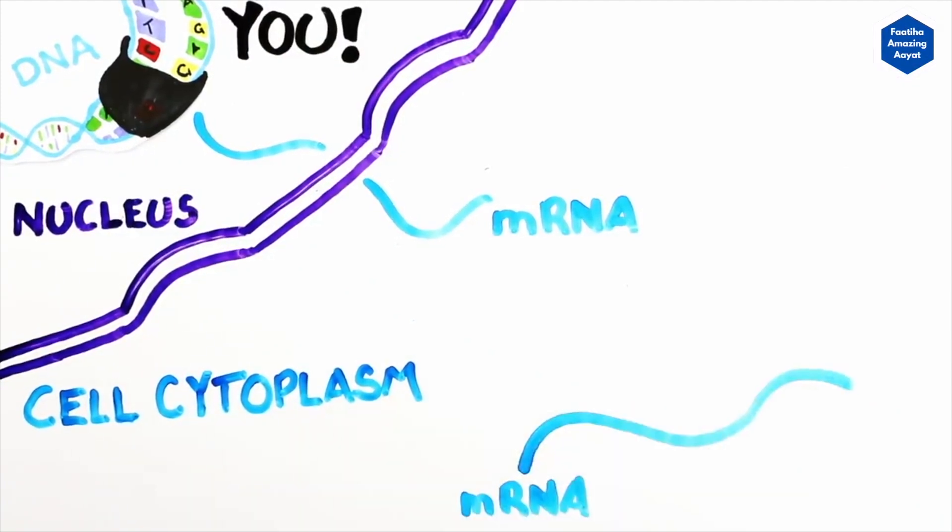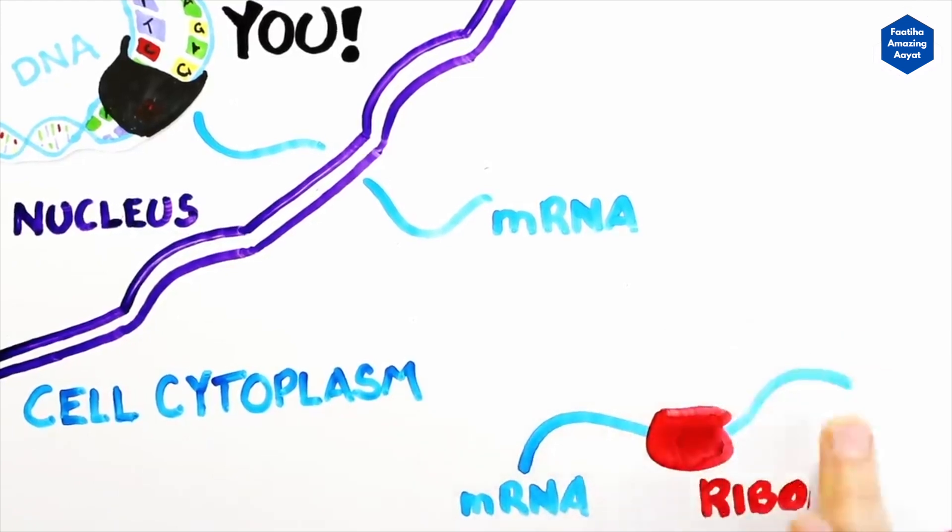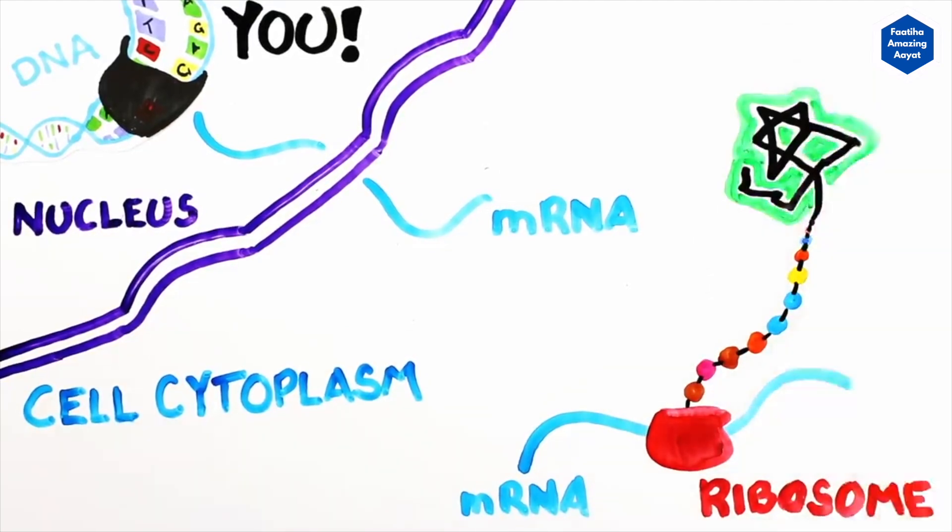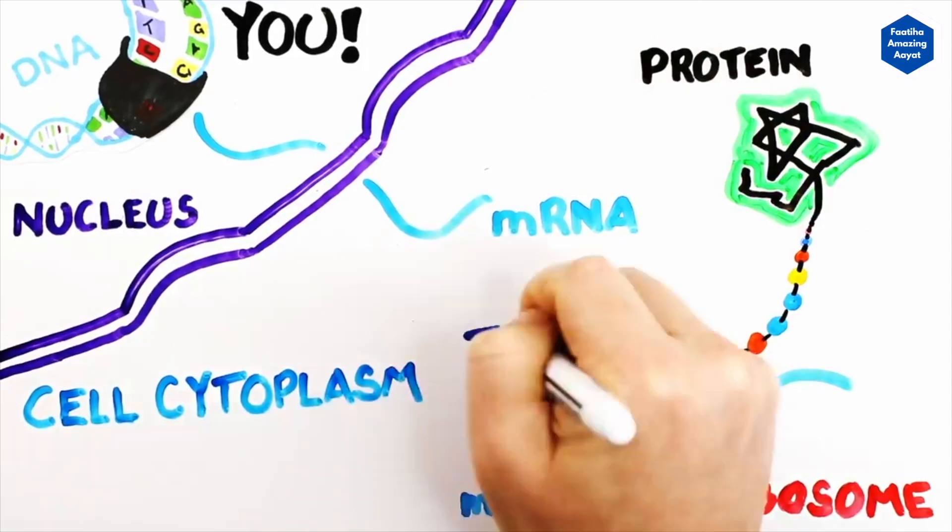And then ribosomes in your cells read the RNA, and depending on the specific code, build the series of amino acids which make protein to keep you alive and functioning. This process is known as translation.